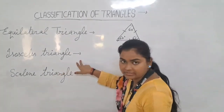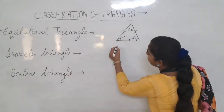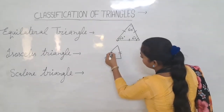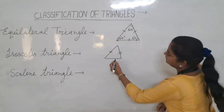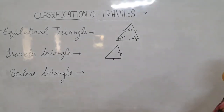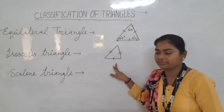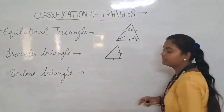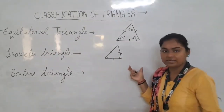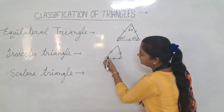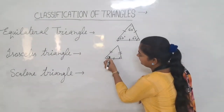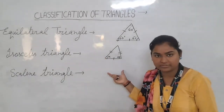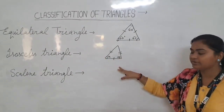Second, we have two sides that are equal and the other is different. Two sides are equal and the other is different. Two angles opposite to the equal sides are also equal — it is X and it is also X. It is an isosceles triangle. In this, we have two sides equal and one different.